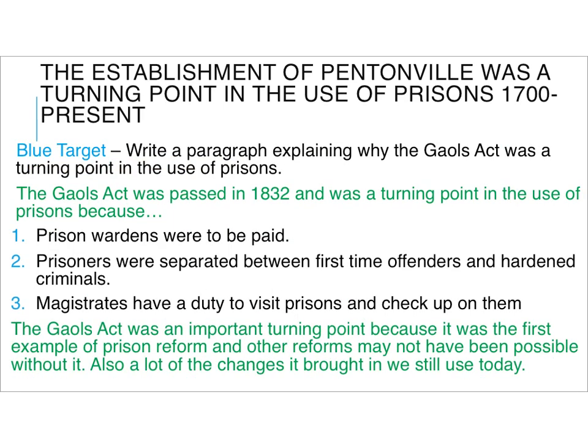Okay, so with the essay question, the blue target is about the Jails Act and whether that was a turning point. I've put: the Jails Act was a turning point in the use of prisons because — and again, it's that sentence starter that's really important. Then I've given you three examples that link with it, and then I've put why that makes it a turning point. Think about what we have today — it's the first reform, the first attempt to change the prison system, which is always a really important turning point. And a lot of the things on that list we still have today. So have a look at it and get it written.